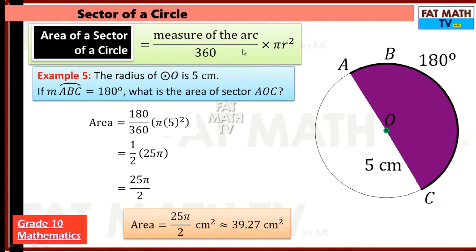It's just like arc length — you find the measure of the arc over 360, but instead of multiplying by the circumference, here for the sector you multiply by the area of the circle, pi r squared. That's it for the area of a sector of a circle. I hope you learned something. Thank you for supporting Fat Math by liking, subscribing, and watching. See you in the next video!